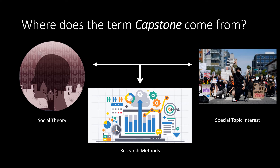A capstone project takes that specialization, it takes your expertise in research methods, and it also allows you to bring in social theory — putting that all together into a single project. You'll choose a specific topic, situate it within the context of existing social theory, and then use various research methods to collect and analyze data to produce some new knowledge.